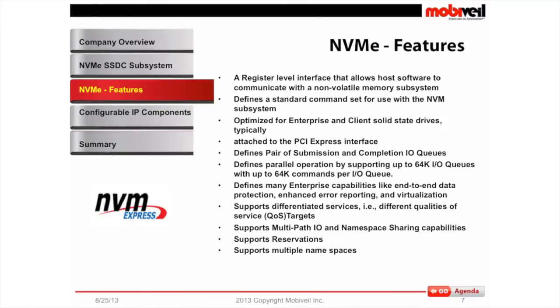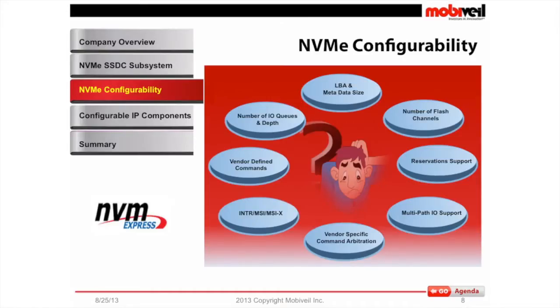There are many features defined in the spec: end-to-end data protection, enhanced reporting, virtualization, QoS, multipath I/O, and namespace sharing capabilities. Reservations are in 1.1 and it supports multiple namespaces. These are great for defining features to address futuristic SSD implementations, but they create a challenge for companies like MobiWale — how do you address that configurability built into the spec and provide an NVMe solution that covers all those varying requirements?